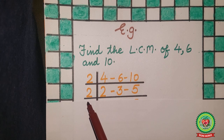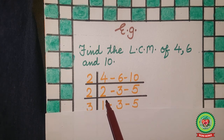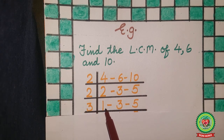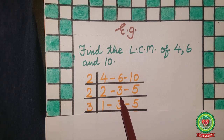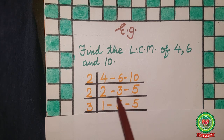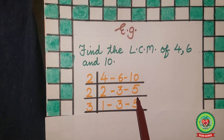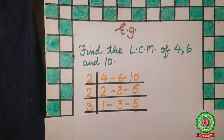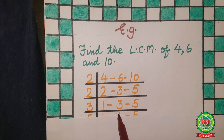On the 2 times table, 2 comes at 1, so below 2 write 1. On the 2 times table, 3 doesn't appear, meaning 3 is not divisible by 2, so bring down 3 as it is. In the same way, 5 is not divisible by 2, so bring 5 down as it is.